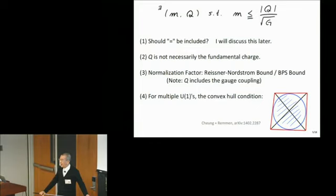There is some confusion about whether Q is a fundamental charge or not, and my understanding is that it doesn't have to be. The normalization factor can be determined either by Reisner-Nordström bound or BPS bound. Note that this Q includes the gauge coupling. In the case of string theory, for example, string coupling is canceled between them, which will become important later.